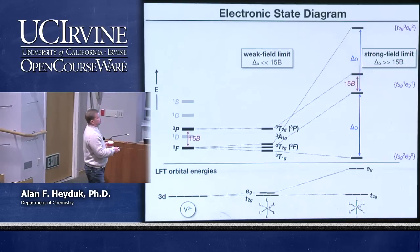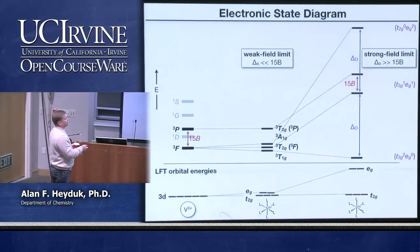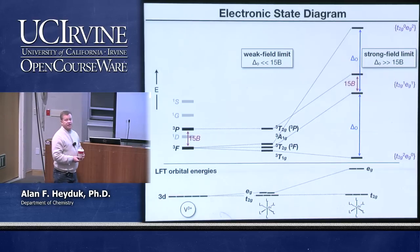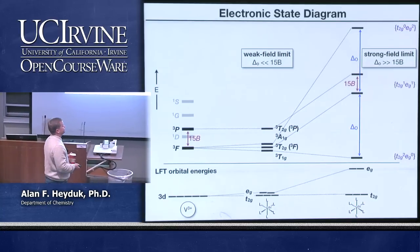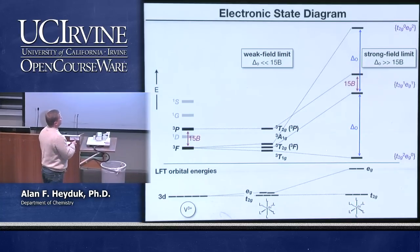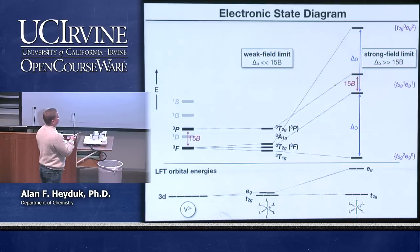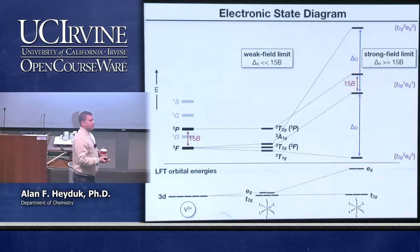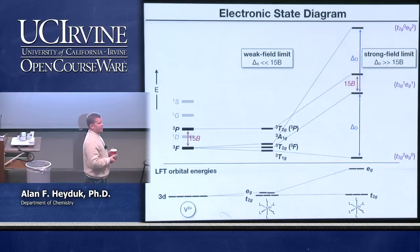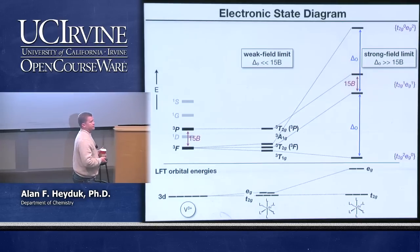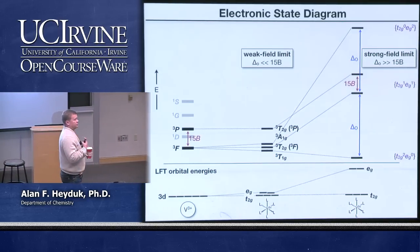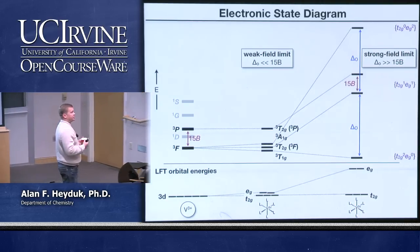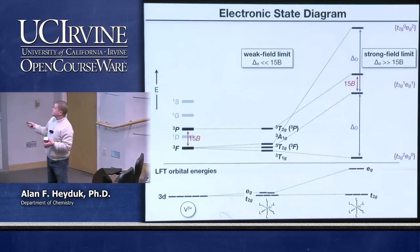The lowest energy transition we can predict is a direct measurement of delta O — that's a good approximation. The second transition from the ground state to the second excited state is delta O plus 15B — the energy of the electron-electron repulsion. The highest energy transition should be fairly close to twice the lowest energy transition because it's two delta O.